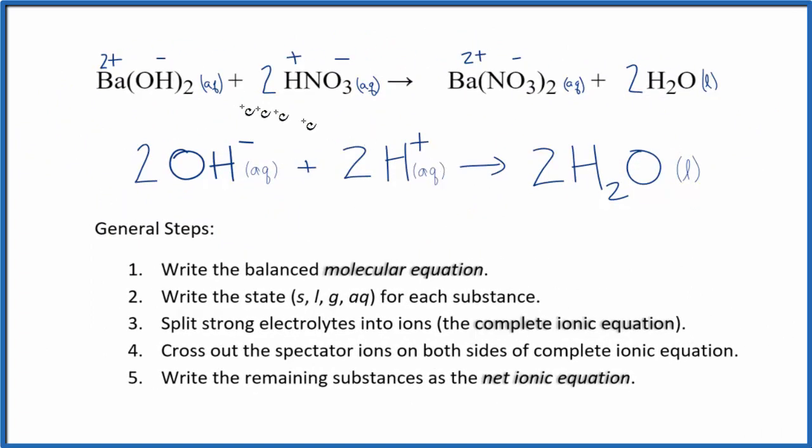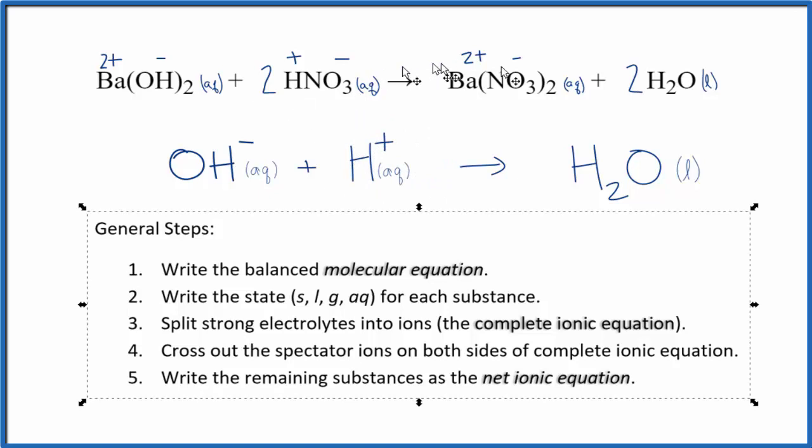So this is our net ionic equation for barium hydroxide and nitric acid. However, there's probably one thing we can do. If you look at it, we have 2, 2, 2. So these are all the same. We can actually just reduce that to 1, 1, 1, and we don't write the 1. So this is a little bit of a better looking net ionic equation for our barium hydroxide and nitric acid.